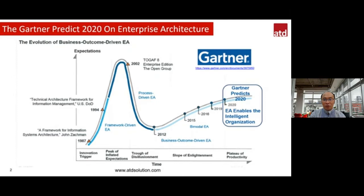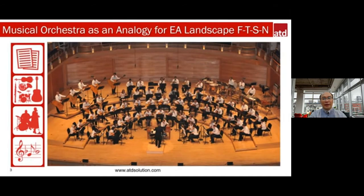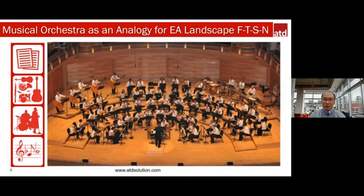That is the context of the Gartner 2020 prediction on enterprise architecture — Gartner clients can download it from their site. Let me explain the enterprise architecture landscape. On the screen you can see four letters: FTSN. F stands for Framework, T stands for Technology or Tool, S stands for Skill, and N stands for Notation.